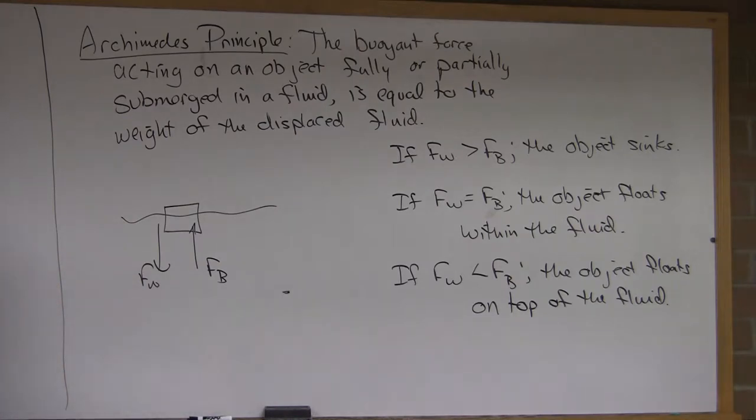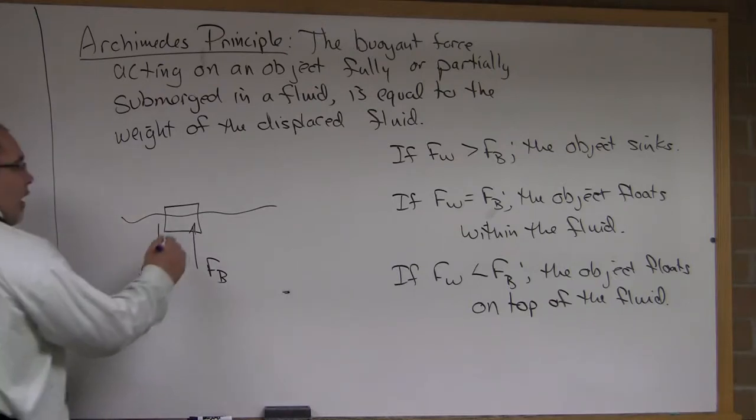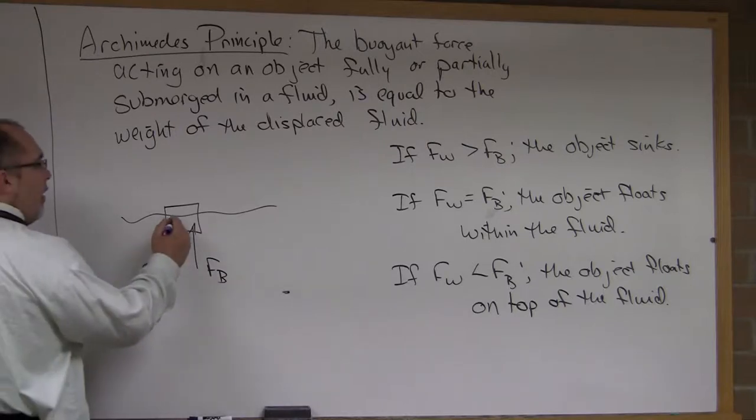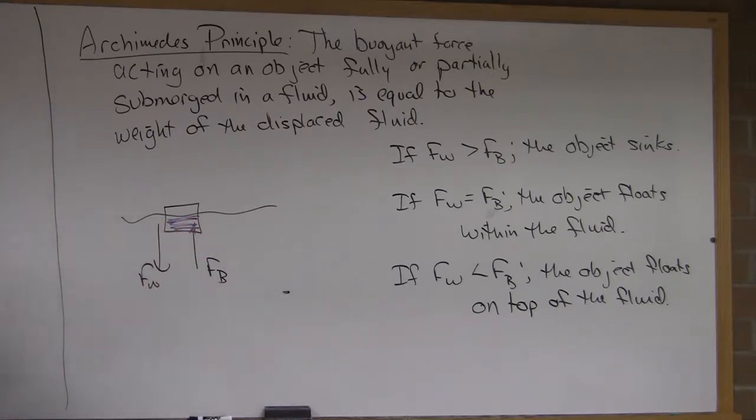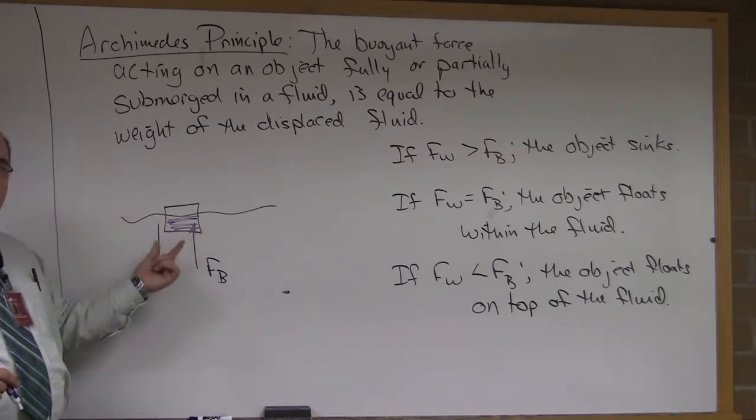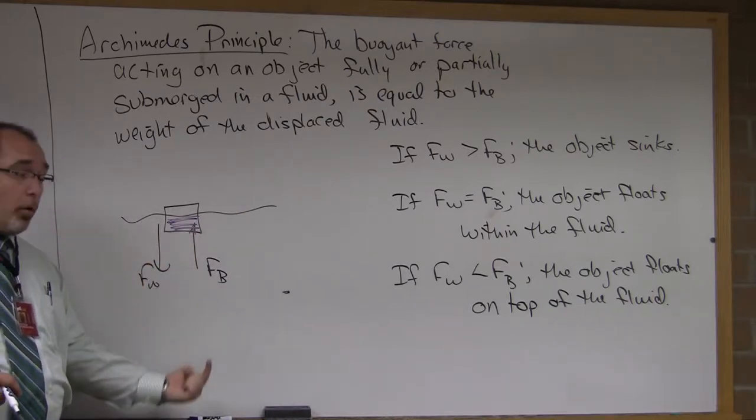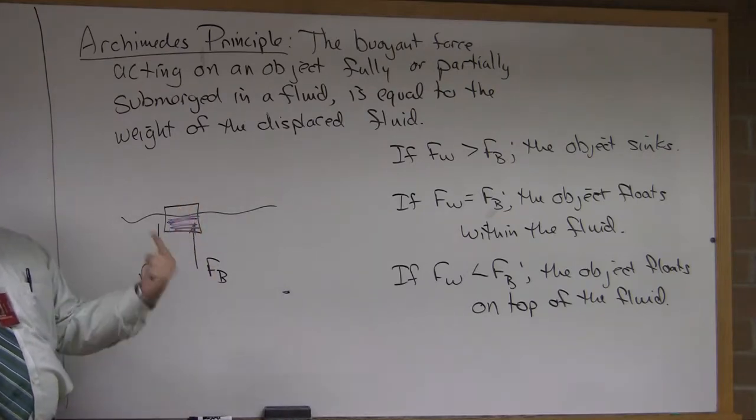In other words, if you have an object floating in a fluid, we'll say the fluid is water again, and this object is a styrofoam brick or something like that, or even a ship. It's a rectangular ship and the ship is displacing a certain amount of water. Basically the force of weight is pulling down, the weight of that water is the magnitude or numerical value of the buoyant force pushing back up on the ship.